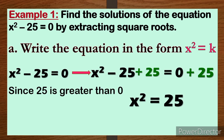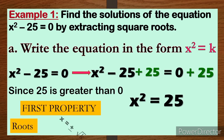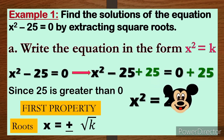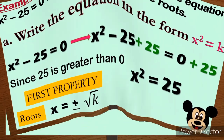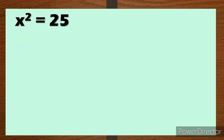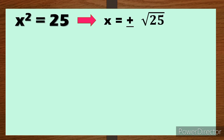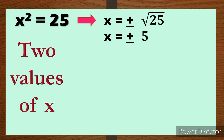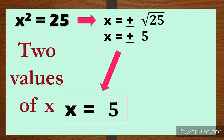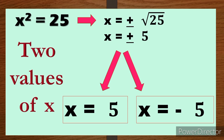Since 25 is greater than 0, based on the first property, when k is greater than 0, x will have two values: x = ±√k. So from x² = 25, we take the square root of both sides: x = ±√25. The square root of 25 is 5, therefore x = ±5. The two values of x are x = 5 and x = -5.